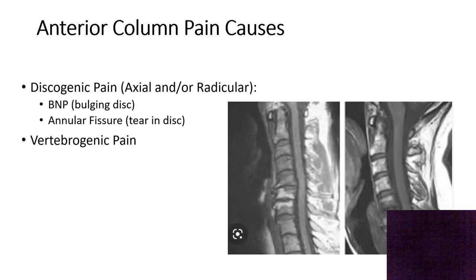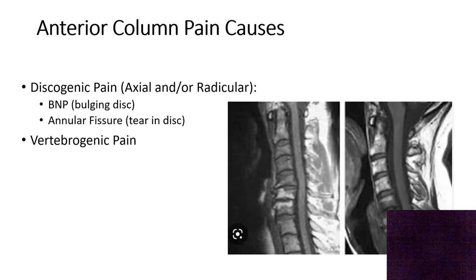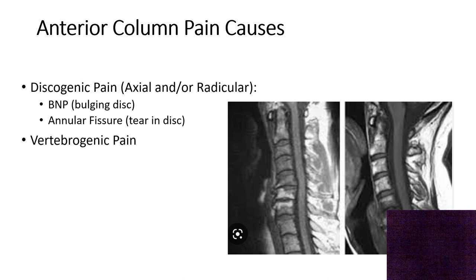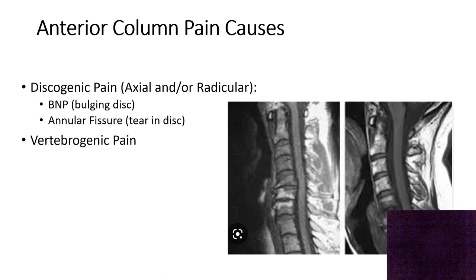Here's an MRI image showing how the vertebral bodies change color on MRIs depending on the chronicity of the inflammation of the bones themselves. This causes a chronic neck pain that stays in the neck and is worse with loading the anterior column with activities like looking down.